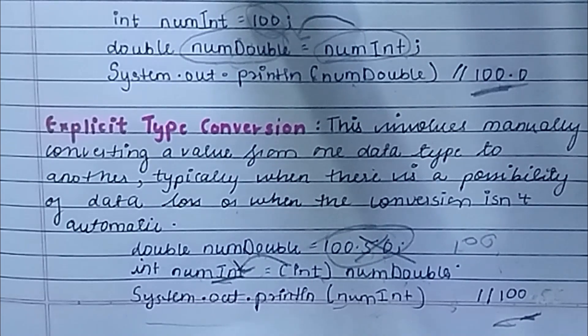So this is explicit type conversion. When a value goes from one range to another, data loss can occur. We have to focus on explicit type conversion so that we don't have much data loss.